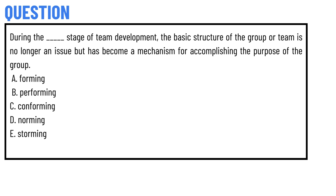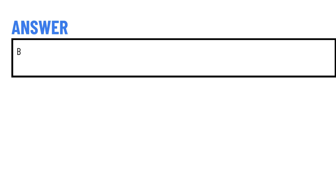Our today's question is: during the stage of team development, the basic structure of the group or team is no longer an issue but has become a mechanism for accomplishing the purpose of the group. Option A: forming. Option B: performing. Option C: conforming. Option D: norming. Option E: storming. The correct answer is option B: performing.